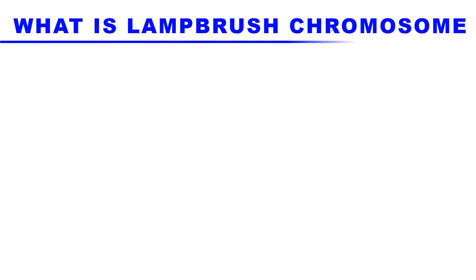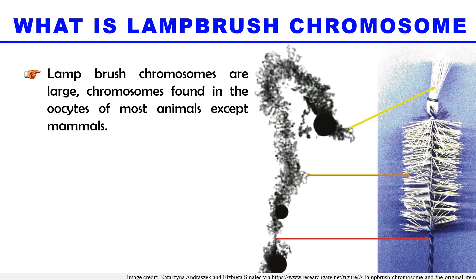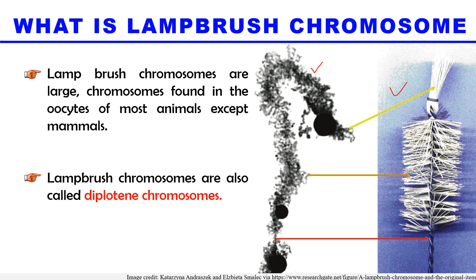Lampbrush chromosomes are giant or big chromosomes which are found in the oocytes of some animals, except mammals. They are called lampbrush because, as you can see in the structure here, they have a brush-like appearance under the microscope. You can compare this lampbrush chromosome with a cleaning brush — that's why it is named the lampbrush chromosome.